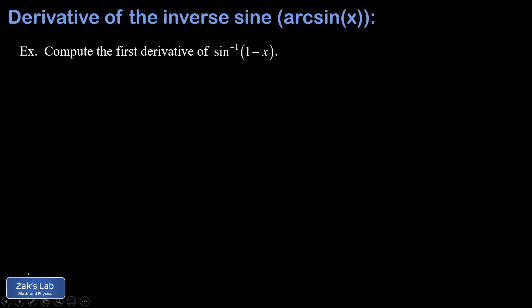We're going to wrap things up by computing a derivative of an inverse sine that has a somewhat more complicated argument. So I have the inverse sine of 1 minus x.